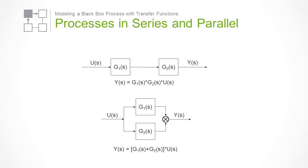If two processes take place in series, the overall transfer function is the product of the two individual transfer functions. If the processes take place in parallel, the overall transfer function is the sum of the individual transfer functions.